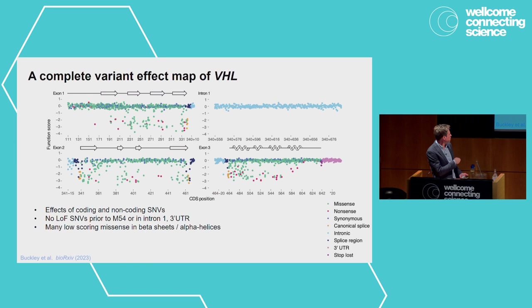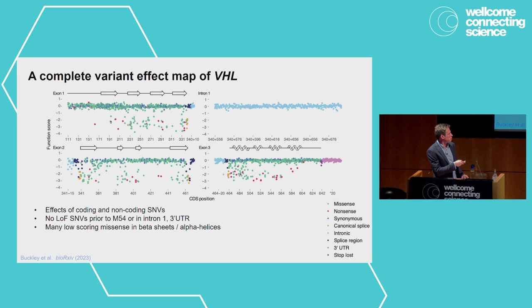We didn't see any loss-of-function variants prior to methionine 54, because that's a known alternate translation initiation site. All the variants before that in ClinVar are VUS, which is important to note. We also tested a region of intron 1 where there had been reports of cryptic splicing variation, but we didn't see any variants dropping out in intron 1 or in the 3-prime UTR either.